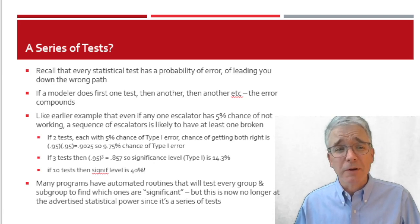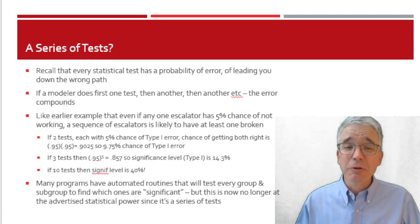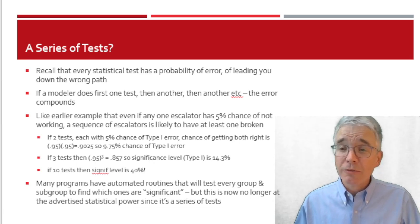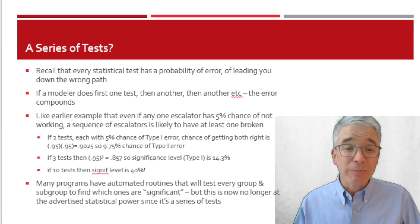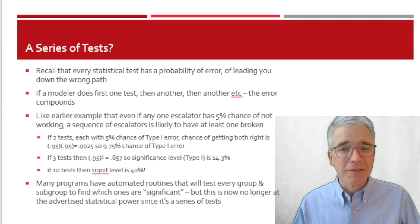But the worst part is a lot of computer stats programs have automated routine that will test every group and subgroup to find a, quote, significant, unquote, difference. But that's no longer actually significant. That's not the advertised statistical power. Doing a series of different tests, so buyer beware. Sometimes people do this knowing that they're doing it wrong. Other times people do it and don't even realize that testing doesn't work the way they think it does or would like it to do.